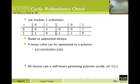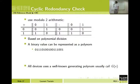CRC — cyclic redundancy check. We are going to do some math: defining plus and minus in a binary way. But I'm not using plus and minus in the usual way; I am using modulo 2 arithmetic. Modulo 2 means the remainder of the division by 2.